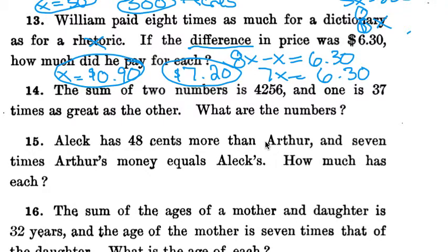Number 14: The sum of two numbers is 4,256, and one is 37 times as great as the other. What are the numbers? So one, we know the least about. 37 times, that one's pretty self-explanatory. The sum of two numbers, okay, so we're not actually doing subtraction, don't get tricked in a long string of subtraction problems. Now we have an addition problem.